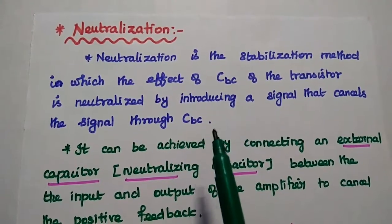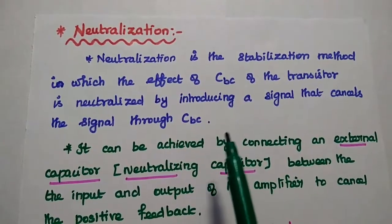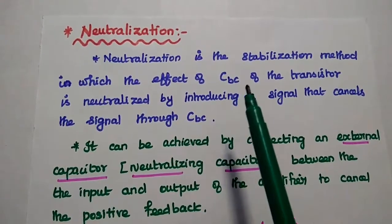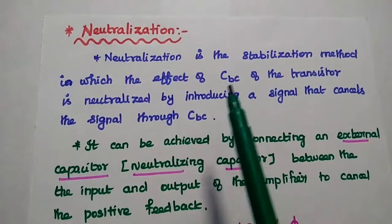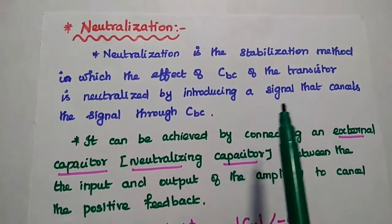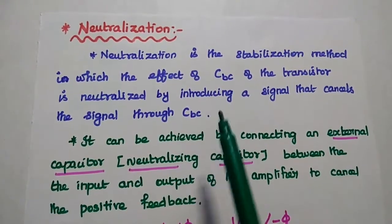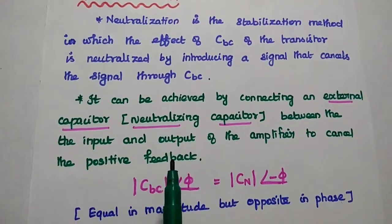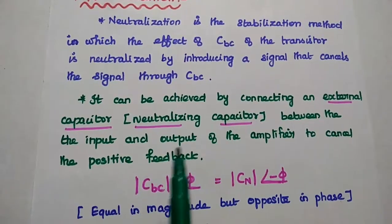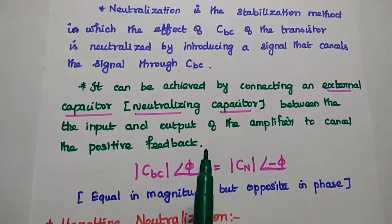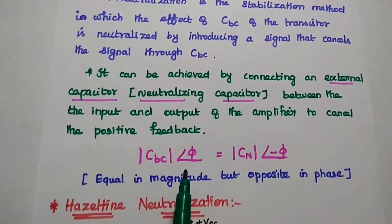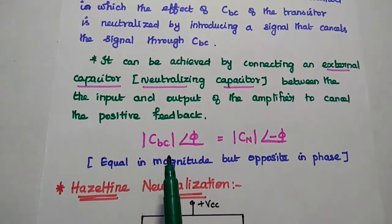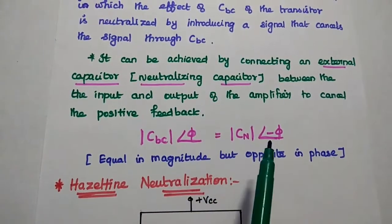Neutralization is a very important stabilization method used for tuned circuits. It is the stabilization method in which the effect of interjunction capacitance between base and collector is neutralized by introducing a signal that cancels the signal through this interjunction. This is achieved by connecting an external capacitor — also called a neutralizing capacitor — between the input and output of the amplifier to cancel the positive feedback. The neutralizing capacitor should have the same magnitude as the interjunction capacitance, but be out of phase.